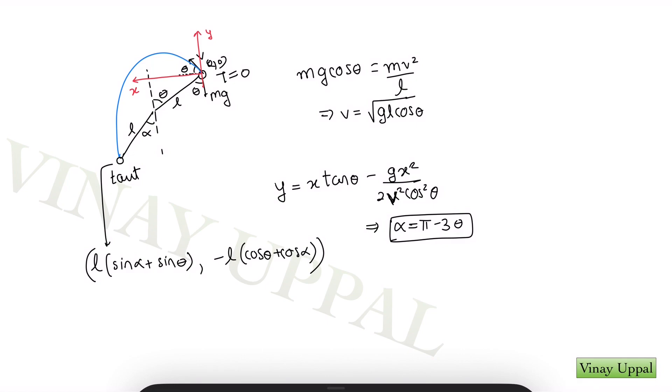One thing that I would like you to think about is, what if theta is greater than 60 degrees? Then alpha will come out to be negative. What does that mean? What does it physically mean when alpha comes out to be negative? Think about that and let me know in the comments.